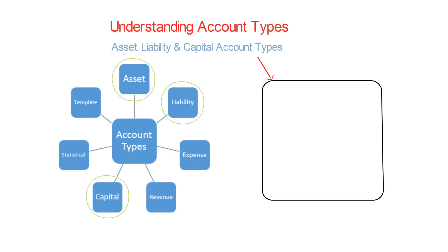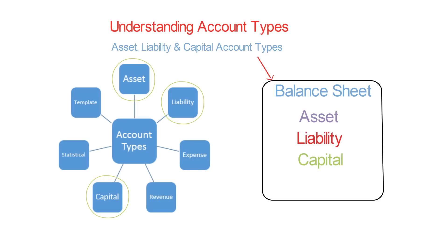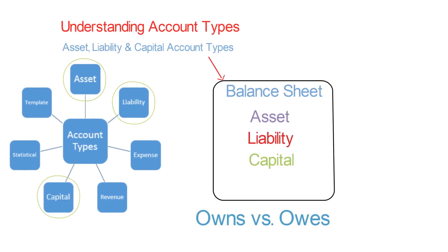A company's assets, liabilities, and capital are all recorded on the balance sheet. The balance sheet represents a company's financial position at the end of a specified date. Assets are things that the company owns. Liabilities are amounts owed for goods and services a business needs. And Capital is the owner's investment of assets in a business. Because the balance sheet informs the reader of a company's financial position at a specified time, it allows you to see what the company owns as well as what it owes to other parties.